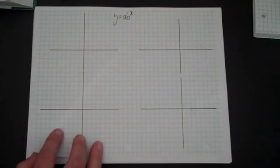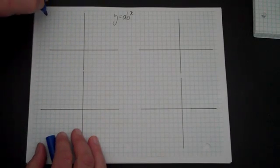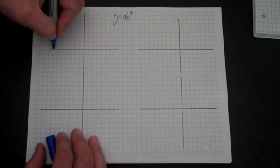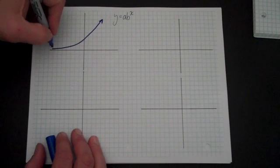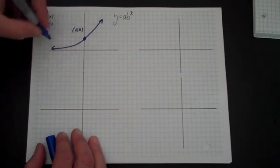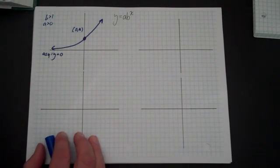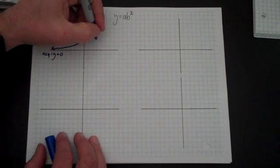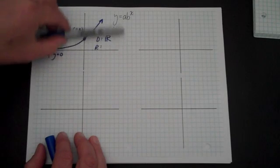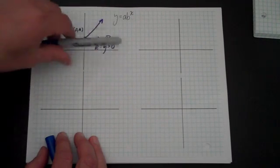If you have y = a · b^x, and b is greater than 1 and a is positive, then that's an exponential growth function. It looks like a curve where the y-intercept is at a, and the asymptote is y = 0. The domain of this function is all real numbers, and the range is everything bigger than the asymptote — in this case, y is greater than 0, not equal to, because that's why it's an asymptote.